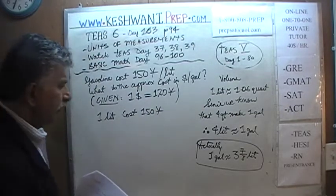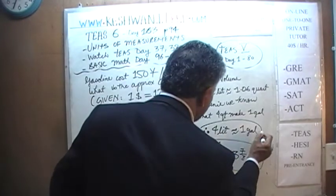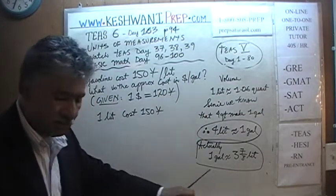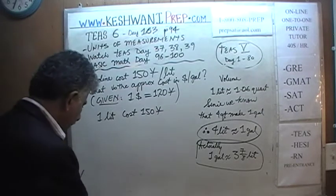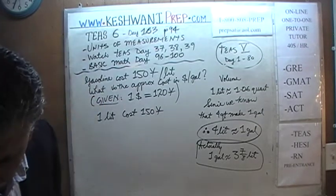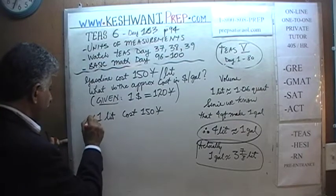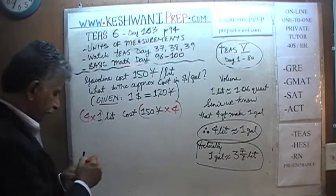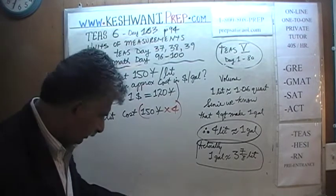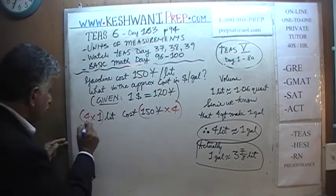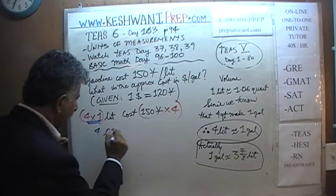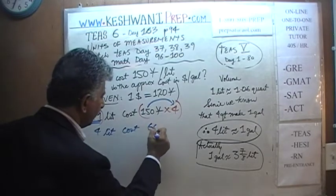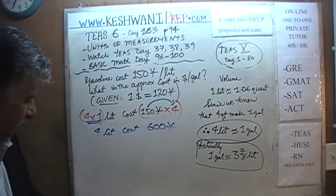But we don't want to buy one liter — we want to buy four liters, because four liters is approximately one gallon. If one liter costs 150 yen and we want to buy four liters, multiply both sides of the equation by four. So now we know that four liters costs 150 times 4 — that's 600 yen.